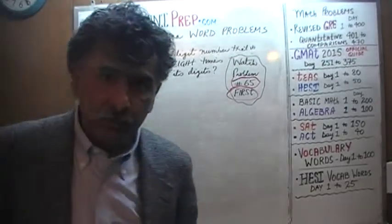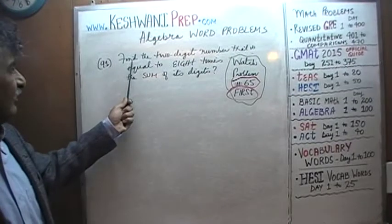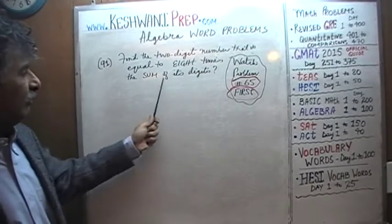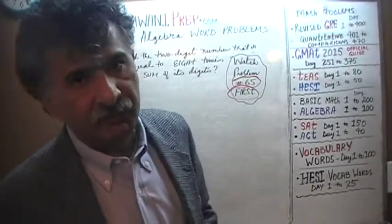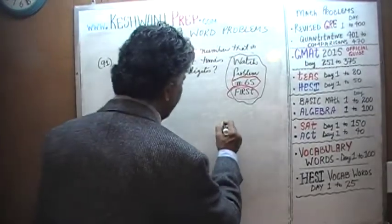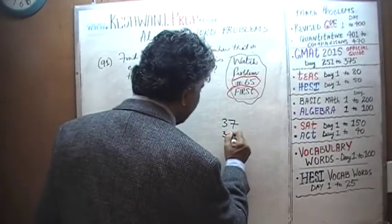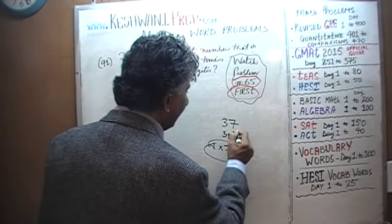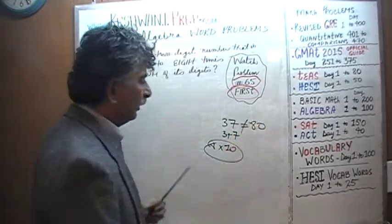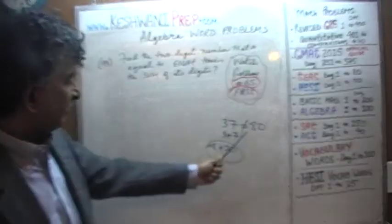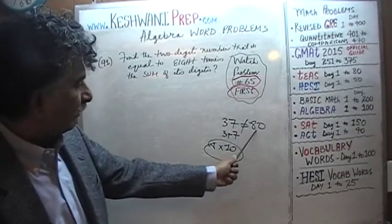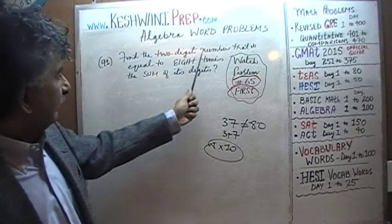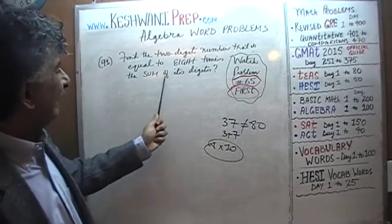Problem number 91, as you can see, is already on the blackboard. It says: find a two-digit number that happens to be equal to 8 times the sum of its digits. For example, if we have 37, the sum of the digits is 7 plus 3, which is 10, and 8 times that is 80. 80 does not equal the number itself, so 37 does not satisfy the condition.